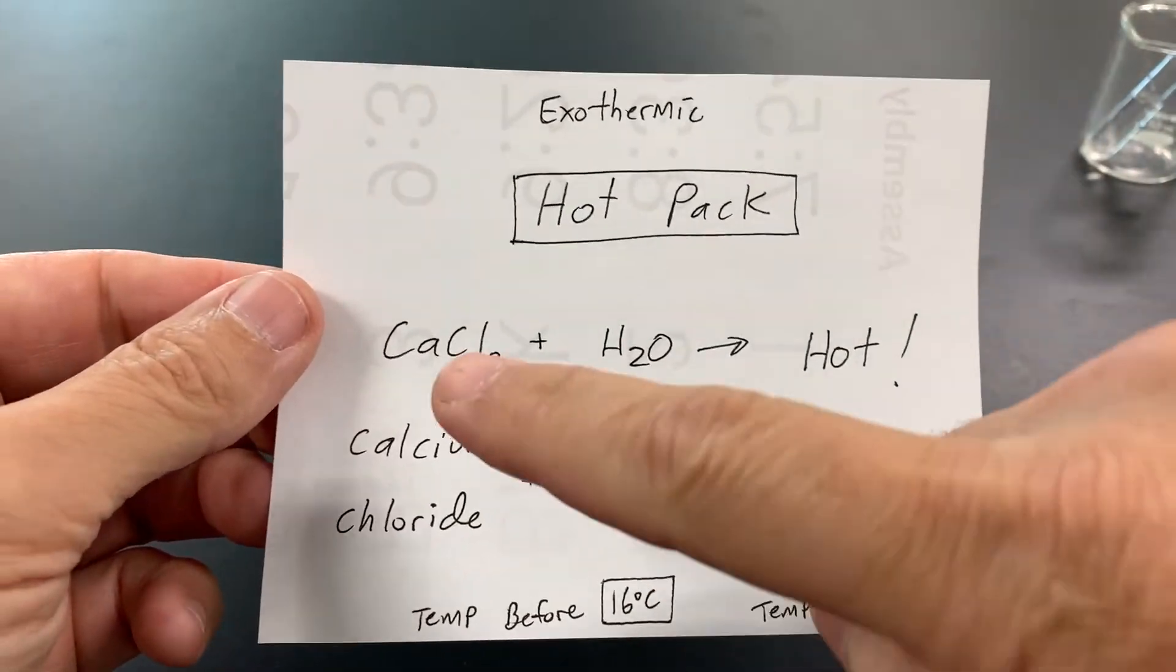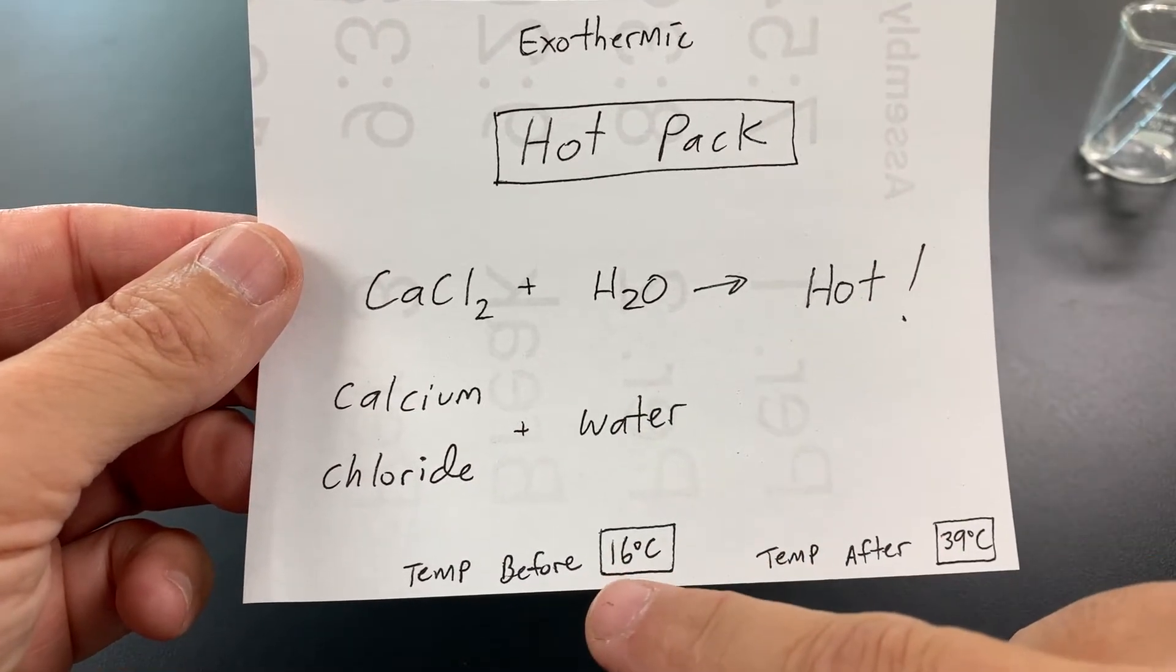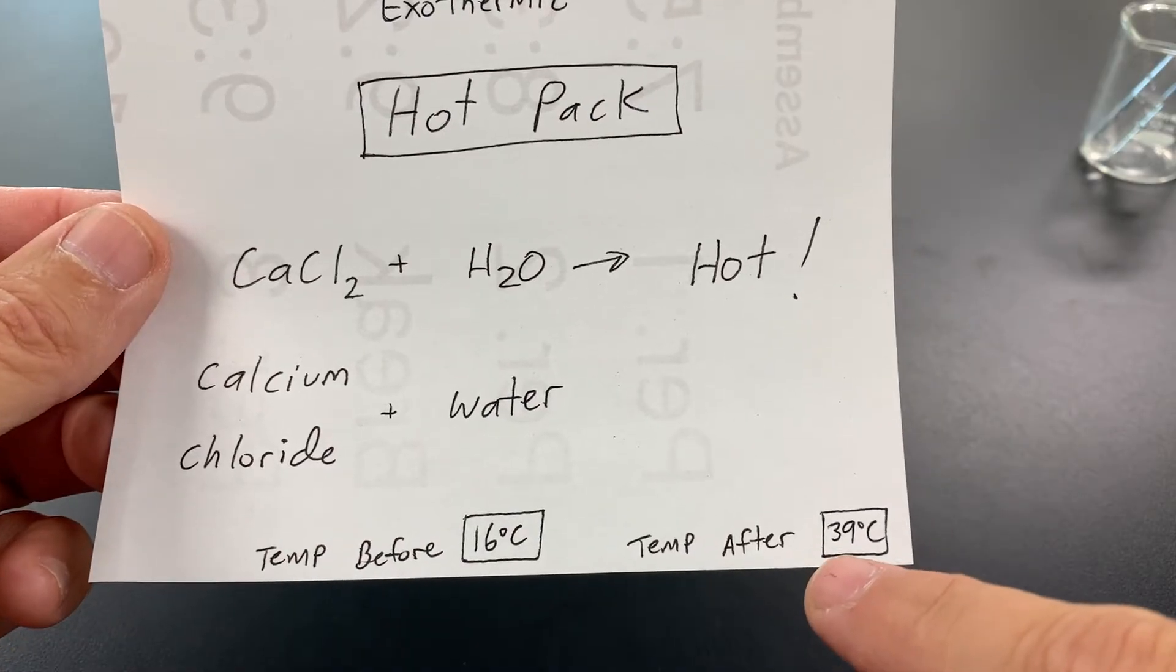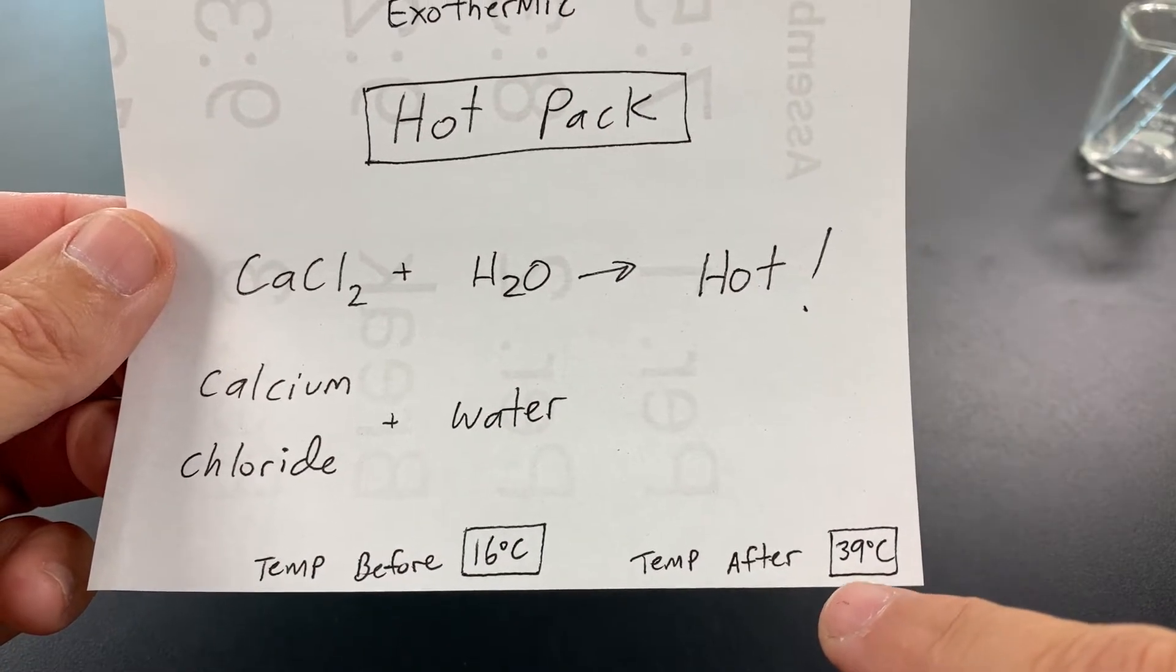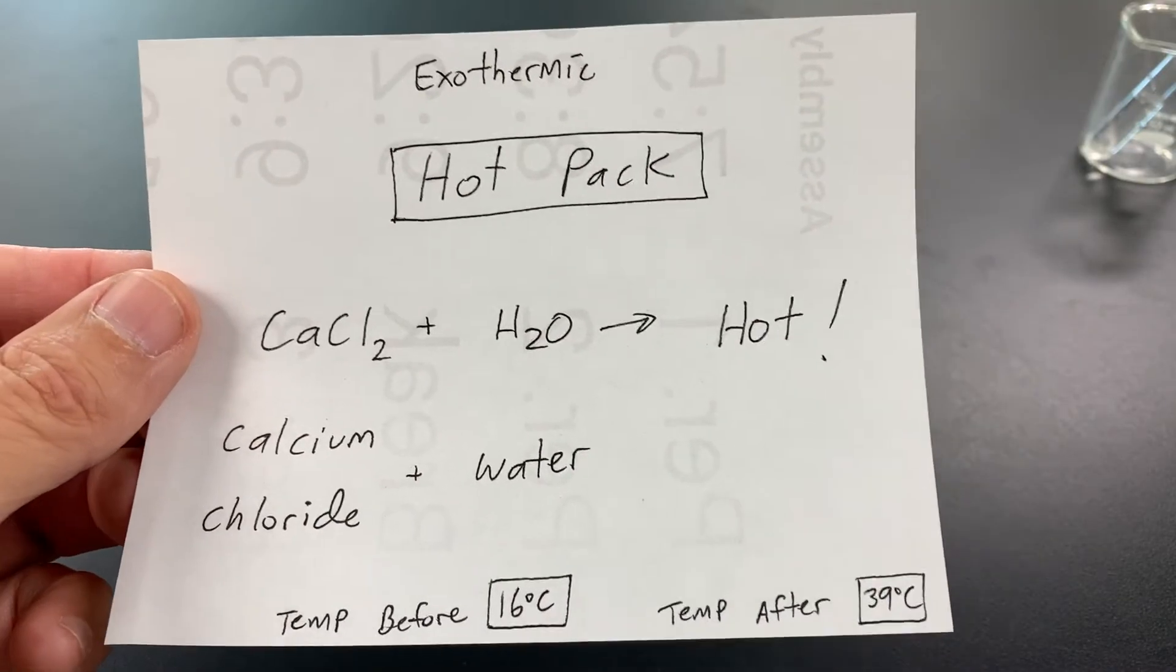Here's our final results for a hot pack. So, when I mixed calcium chloride with water, it got hot. It went from 16 degrees, which is kind of cool, all the way up to 39 degrees, which is a little over 100 degrees Fahrenheit. So, that's an example of an exothermic reaction or a hot pack.